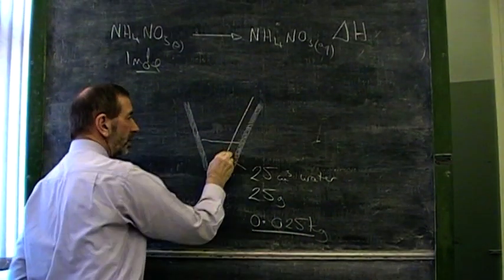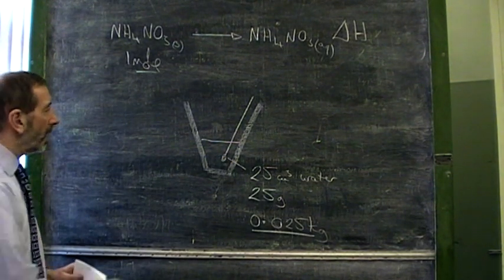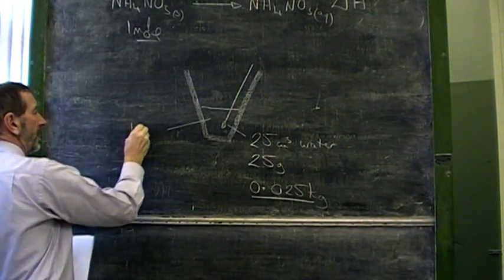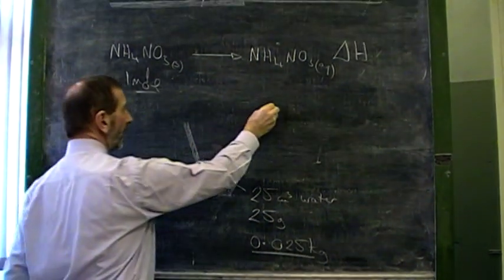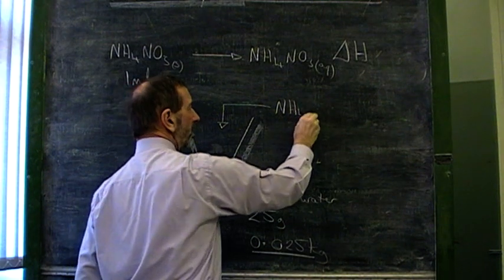You would need a thermometer here, because you need to monitor any change in temperature. Let's suppose we start with water from the tap, 18 degrees Celsius, let's say. Then we come along and we add some ammonium nitrate.